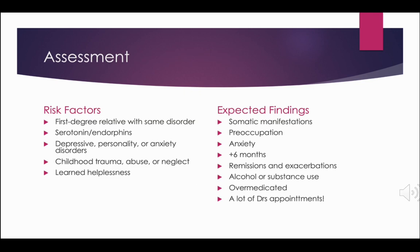Risk factors include a first-degree relative who has a somatic symptom disorder, decreased levels of neurotransmitters such as serotonin and endorphins, depressive disorder, personality disorder, or anxiety disorder, learned helplessness, and childhood trauma, abuse, or neglect. These somatic manifestations disrupt the client's daily life and they are preoccupied with them. There is increased anxiety regarding medical symptoms, symptoms lasting more than six months with remission or exacerbation, possible alcohol or substance use, over-medication with analgesics and anti-anxiety medications, and use of multiple health care providers.